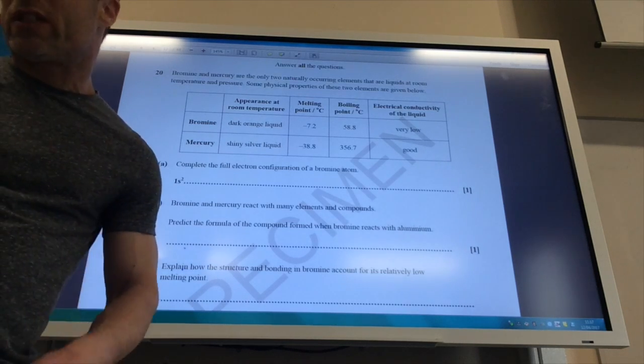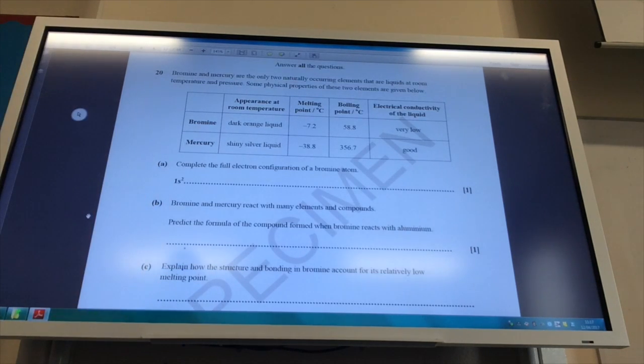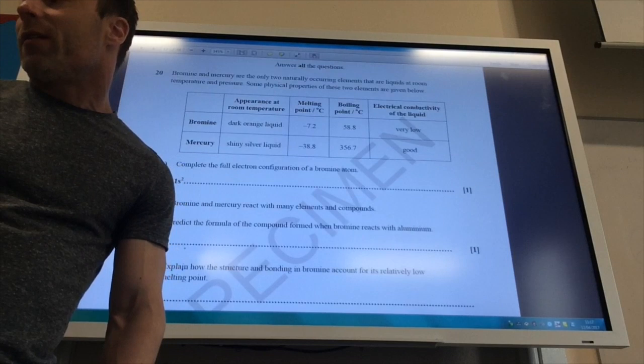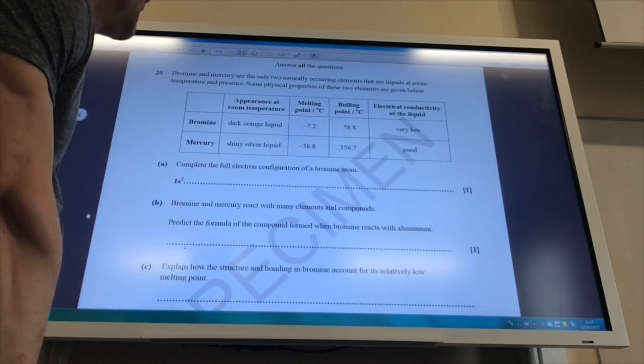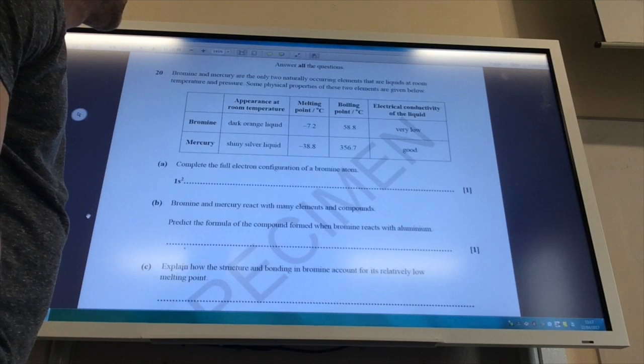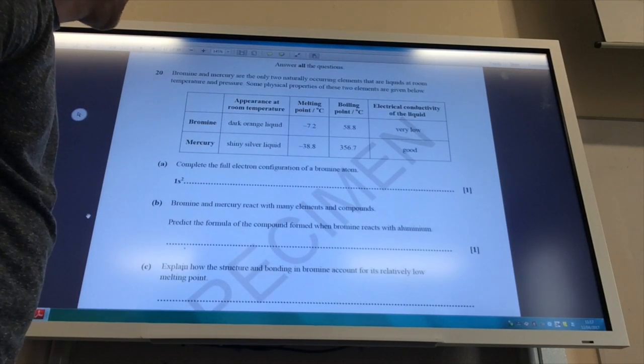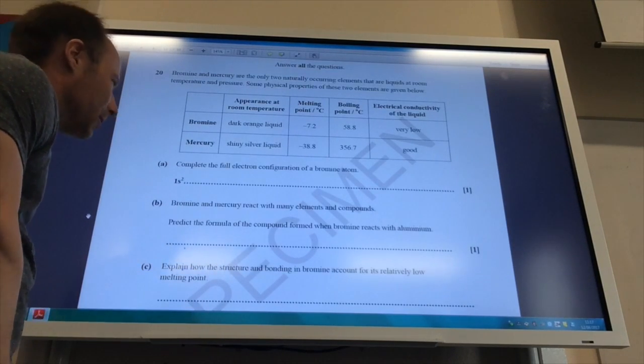Right, so now we're on to section B. Giving me some information about bromine and mercury here and some properties. So first of all, complete the electronic configuration of a bromine atom.